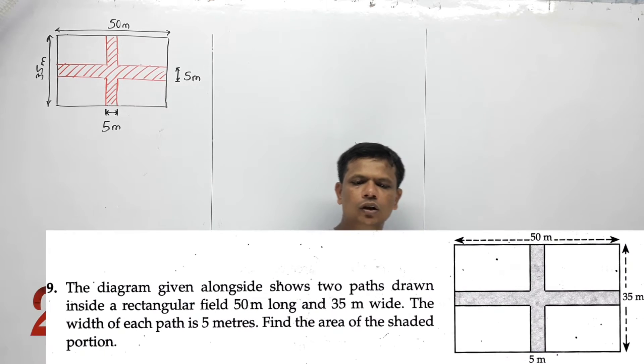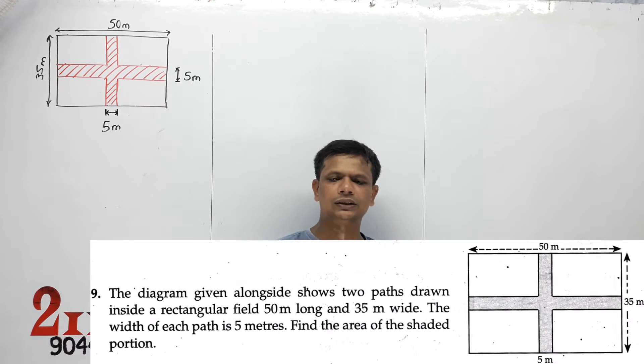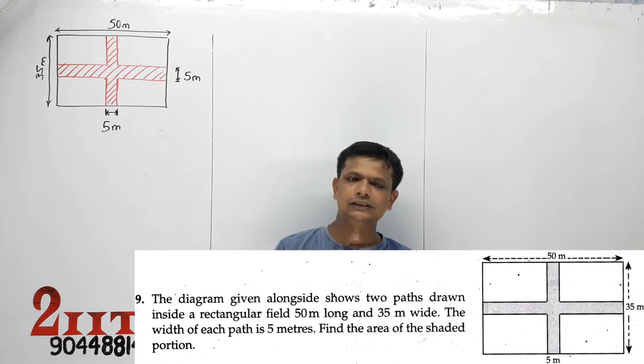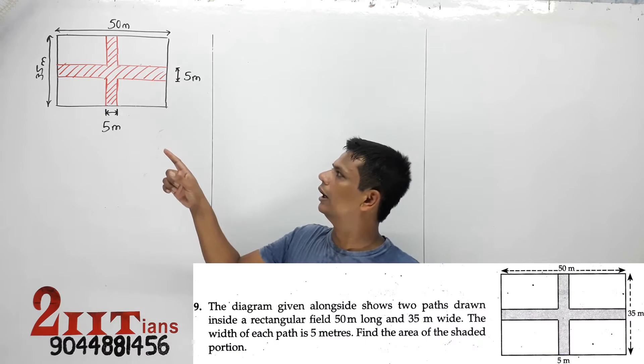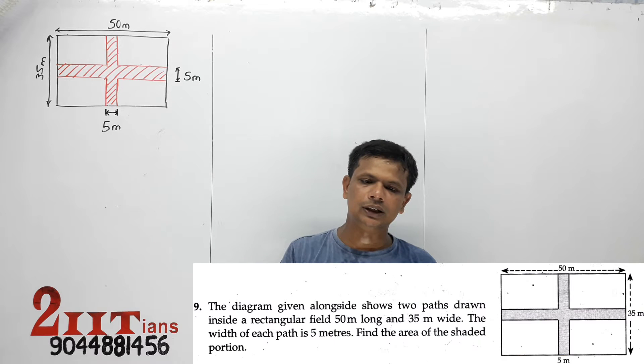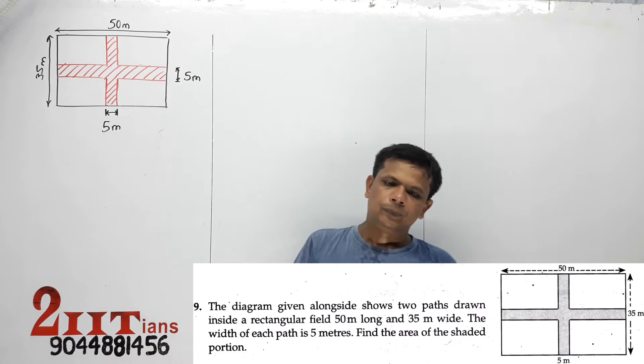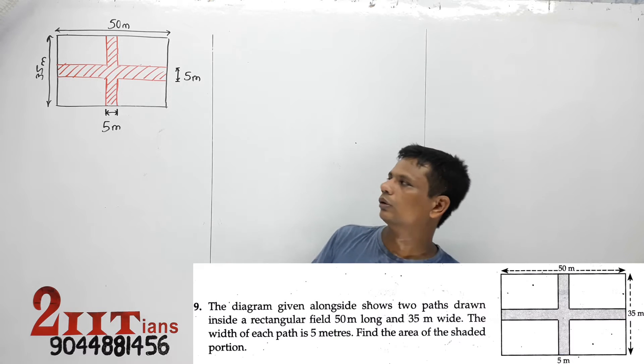The diagram given alongside shows two paths drawn inside a rectangular field 50 meter long and 35 meter wide. The width of each path is 5 meter. Find the area of the shaded portion.